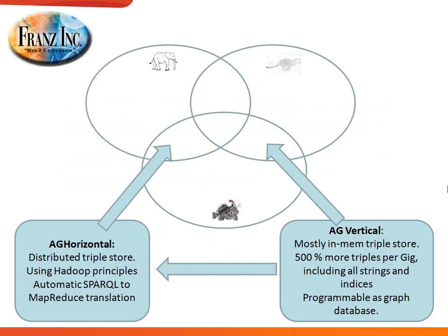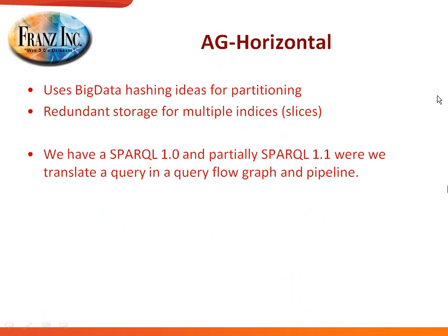So at Franz we're now working on two alternative solutions to the scalability problem. We have something called AG Horizontal — a distributed triple store using new principles, where we automatically take SPARQL and turn it into intelligent MapReduce operations. We also have a tool called AG Vertical — a mostly in-memory triple store. You can store far more triples per gigabyte, including all the strings and indices, and it's programmable as a graph database. In AG Horizontal, we use big data hashing ideas for partitioning, with a store for every shard, and an almost complete SPARQL 1.1 where we translate the query into a query flow graph and pipeline.